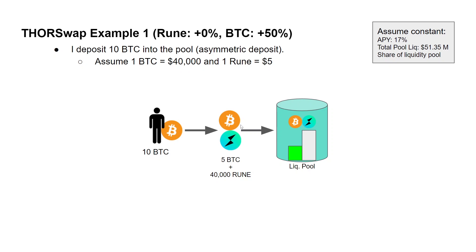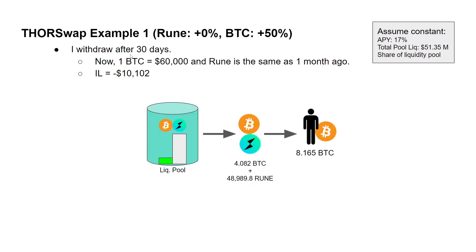I deposit my 10 Bitcoin, and the protocol splits it into RUNE tokens and Bitcoin — half Bitcoin, half RUNE — converting to 40,000 RUNE. That gets deposited into the liquidity pool, which holds much less Bitcoin than RUNE tokens because of the price difference, while the total values of the two tokens must maintain a 50-50 ratio. After 30 days, Bitcoin has risen to $60,000 — a 50% increase — while RUNE stayed the same, resulting in an impermanent loss of about $10,000.